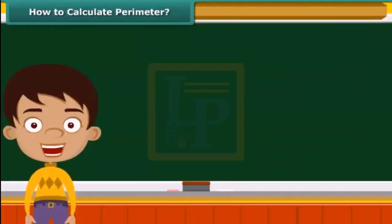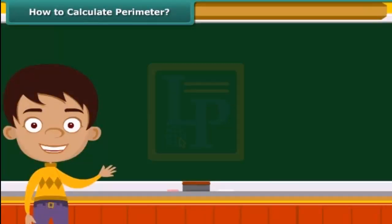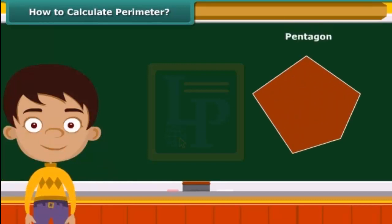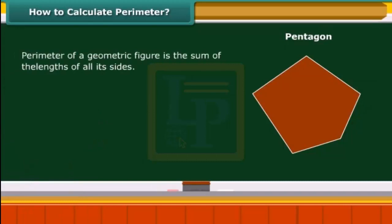Now that you have understood what perimeter stands for, let us try to calculate the perimeter of a pentagon. We have seen that the perimeter of a geometric figure is the sum of the lengths of its sides. A pentagon is a closed geometric figure of 5 sides.